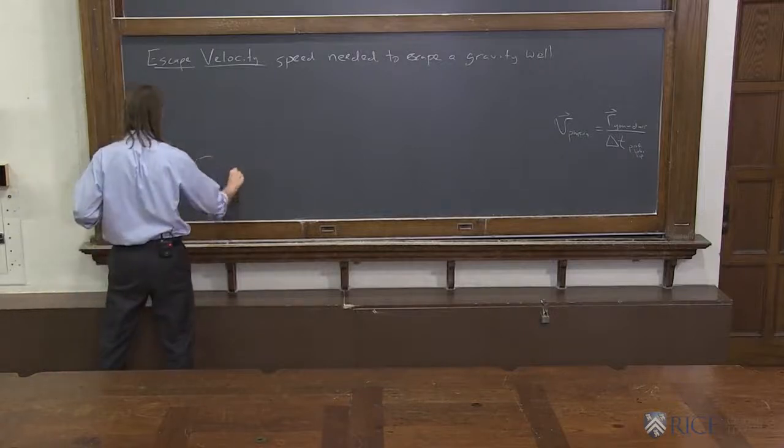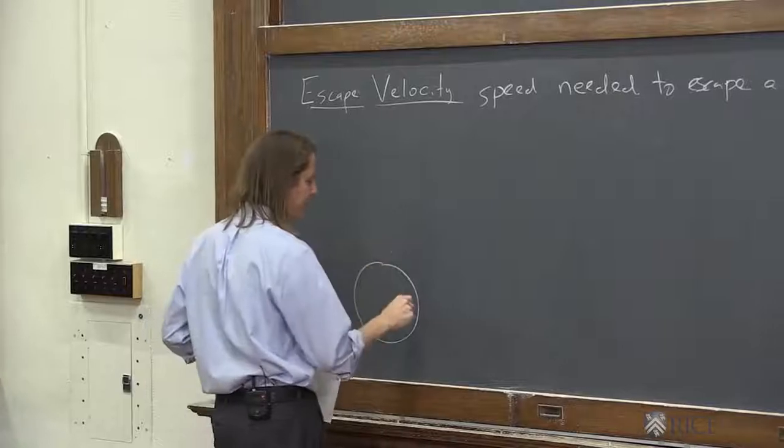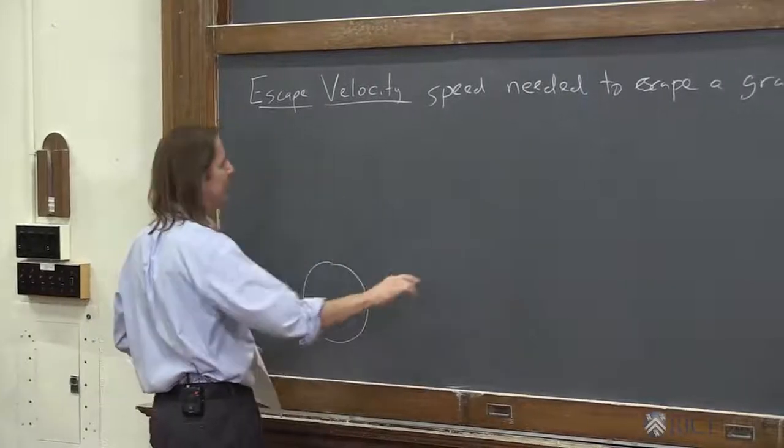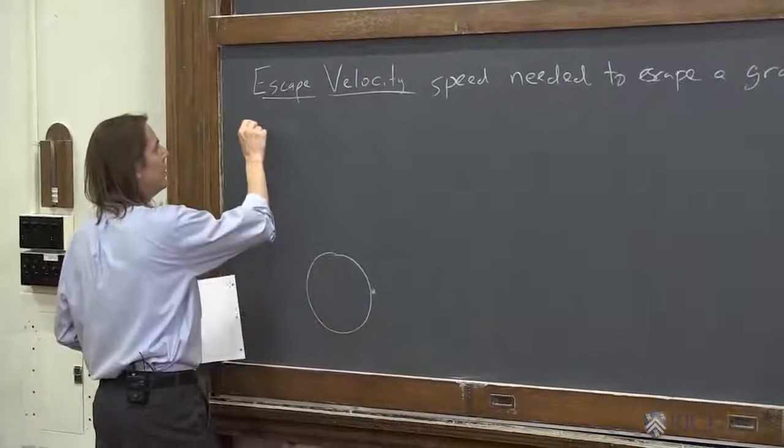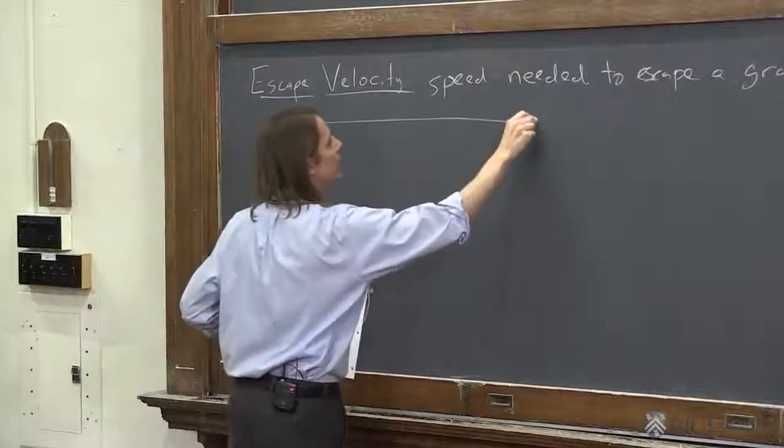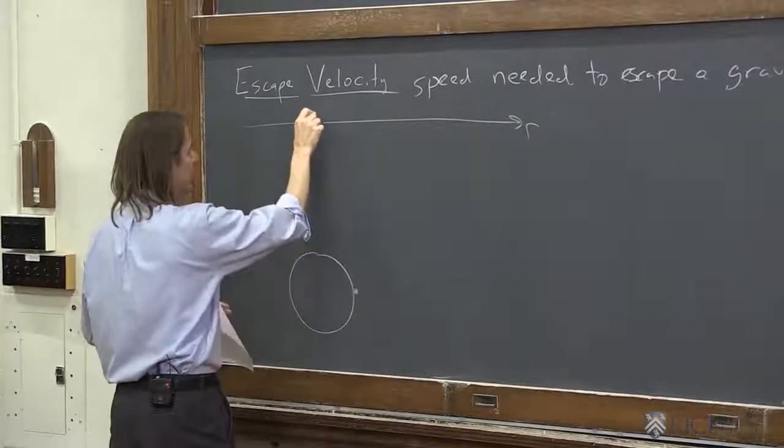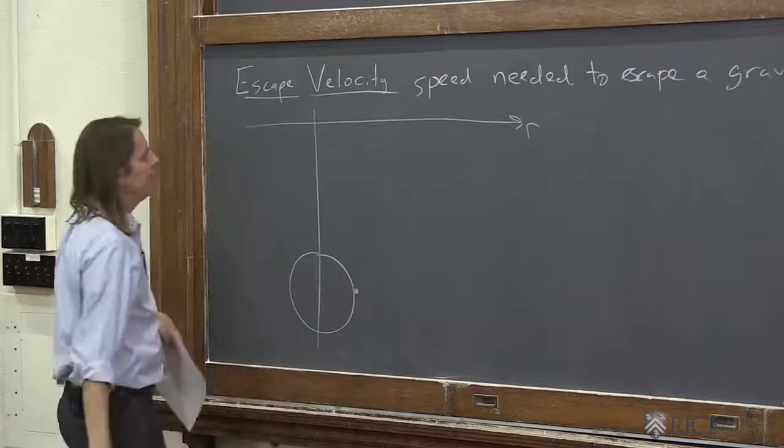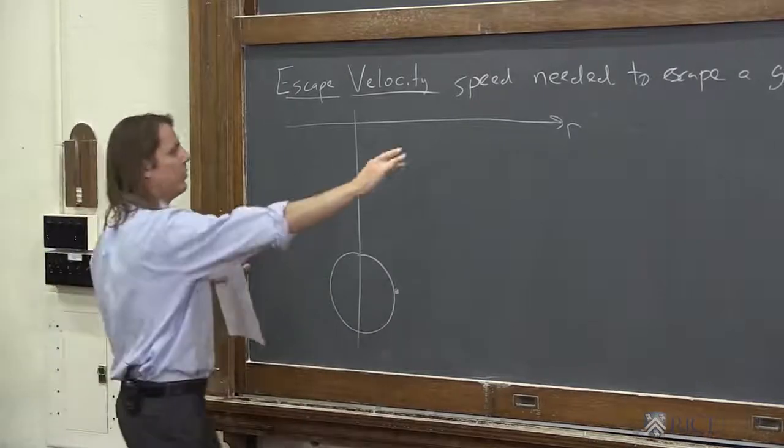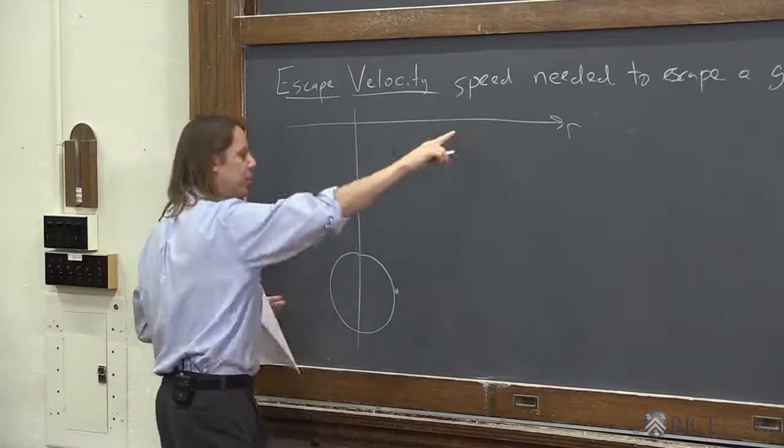Here's the earth. There it is again. And we've got this object here, and we want to get it completely out of the well. So let's draw the gravity well here. So this is r, how far we're going to go from the center of the earth. And we know the gravity well is sort of a negative 1 over r term.